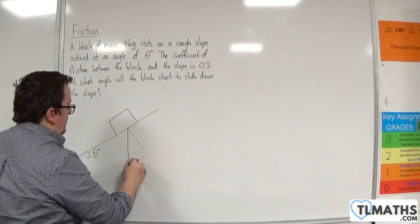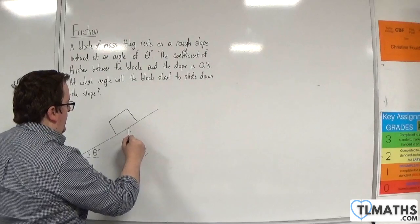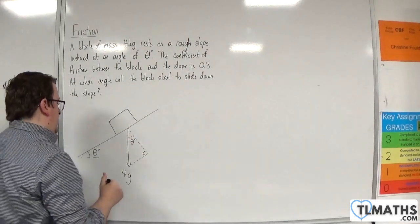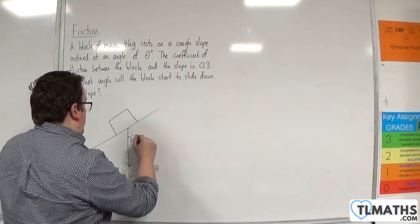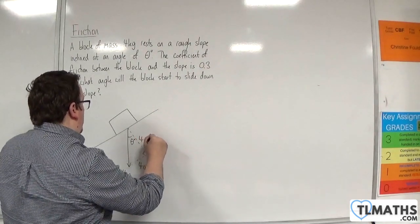And I will complete that triangle. That angle is also going to be theta. This opposite side will be 4g sine theta. And this will be 4g cosine theta.